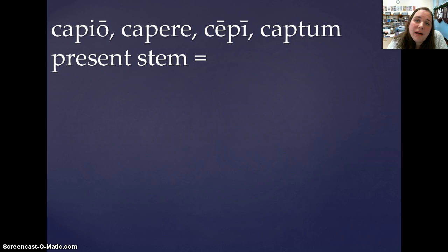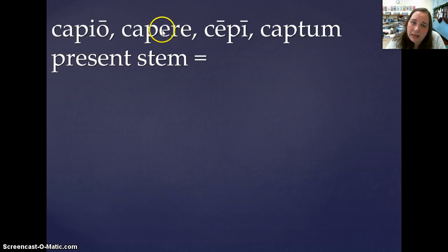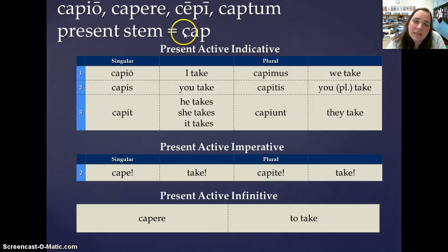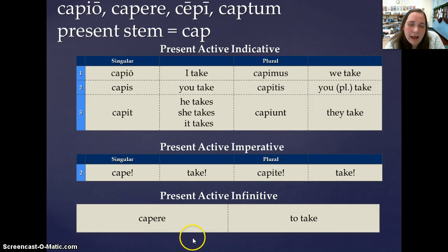Let's take a look at how our paradigm verb, capio, capere, cepi, captum, conjugates. You can tell this is a Third IO because it has ERE, no macron, in its second principal part, and it ends in IO in its first principal part. We get our present stem by taking the ERE off the second principal part, so our present stem is cap-. Present: capio, capis, capit, capimus, capitis, capiunt. The singular imperative is cape, plural capite, and our infinitive is capere.